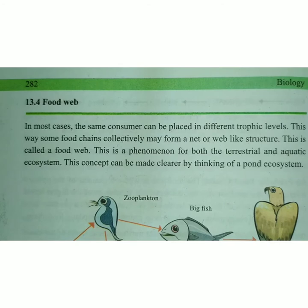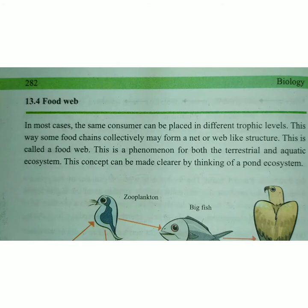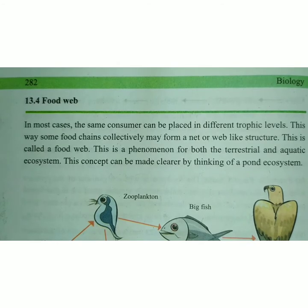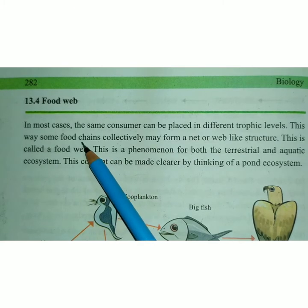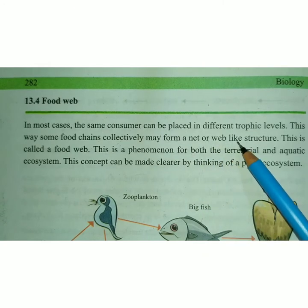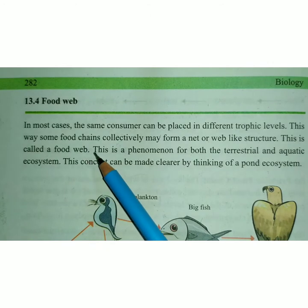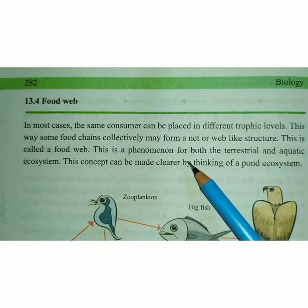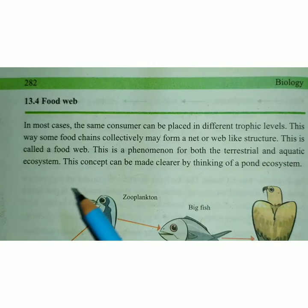First, I want to explain about the food web. In most cases, the same consumer can be placed in different trophic levels. This way, some food chains collectively may form a net or web-like structure. This is called a food web, and it is a phenomenon found in both terrestrial and aquatic ecosystems.